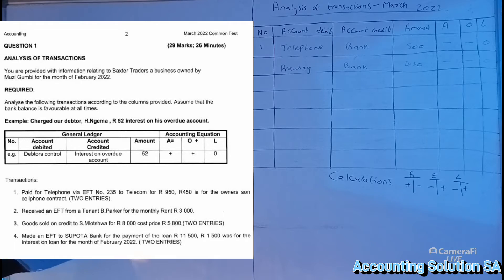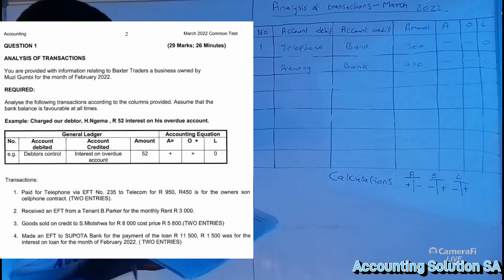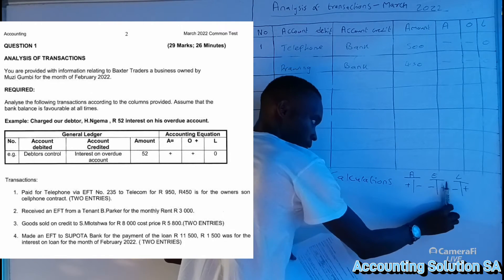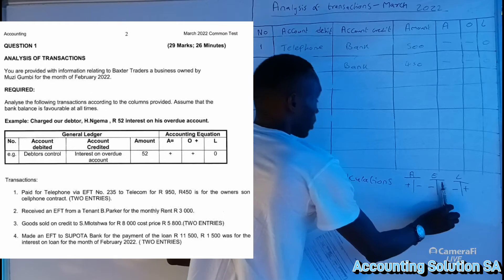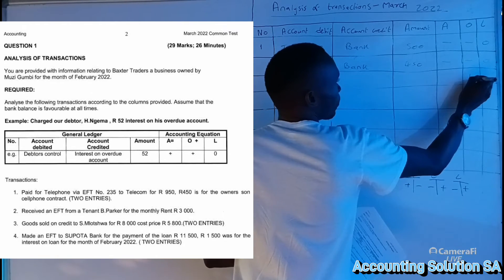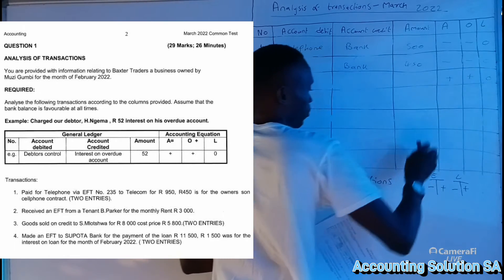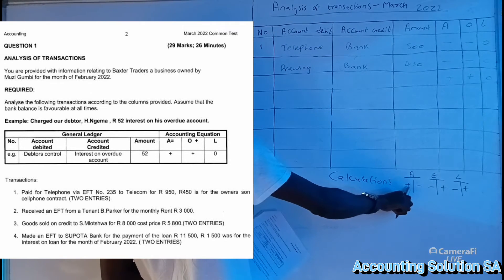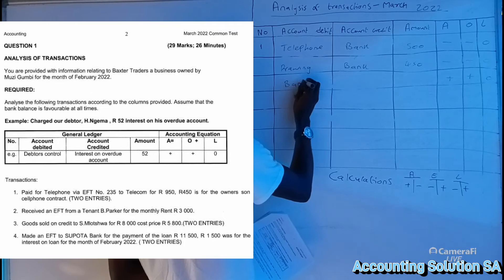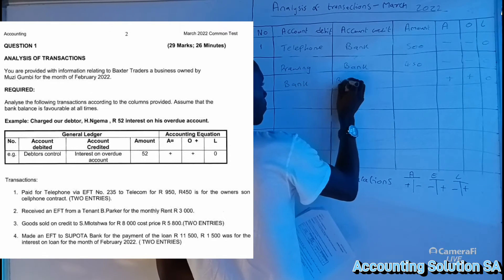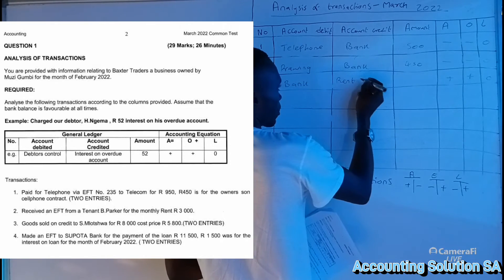You have to write it like this if you have a question that is related to number one. Number two: received EFT from tenant, B Parker, for monthly rent of 3,000. Rent income is an income in this side, equity is going to increase, and assets is going to increase as well. Why? Because we receive money, cash, a bank. Bank has increased and rent income must be recorded on the credit side.